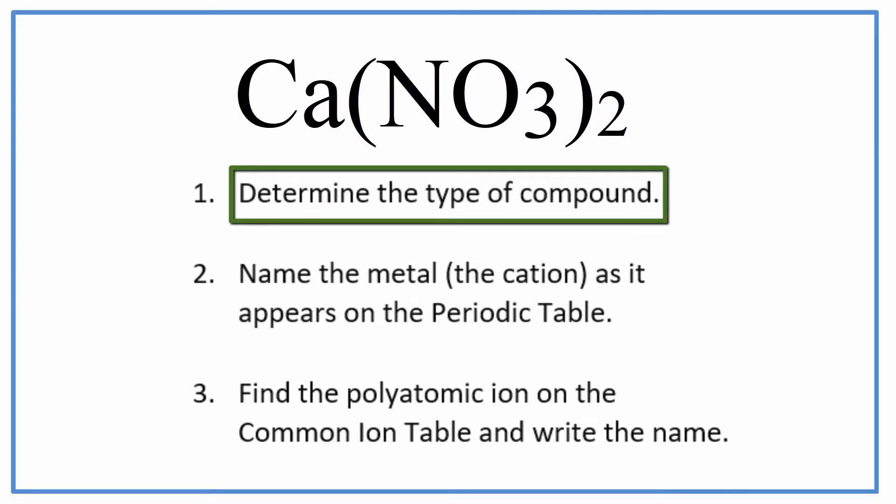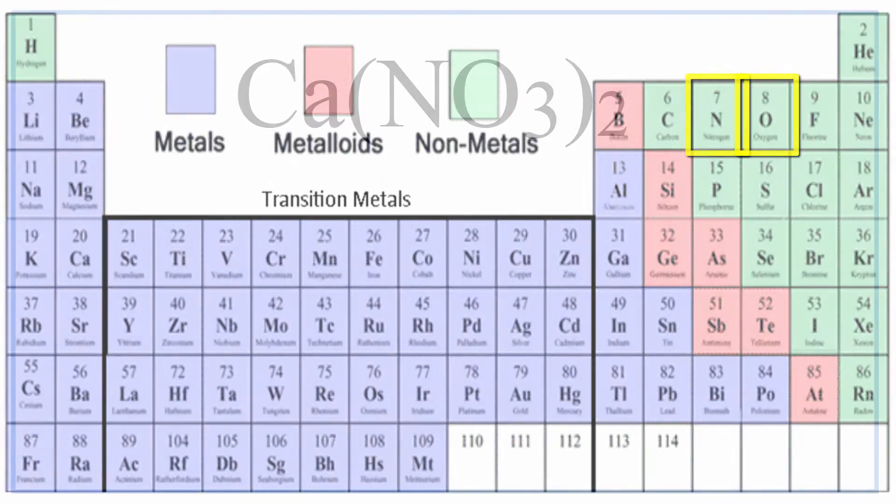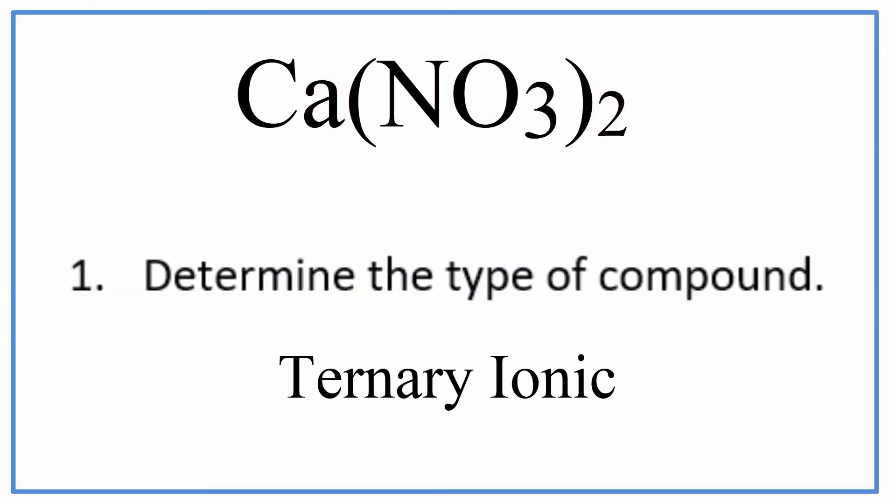On the periodic table, we can see that calcium is a metal, and then that NO3 group, that's a group of nonmetals, a polyatomic ion. So that makes this a ternary ionic compound.